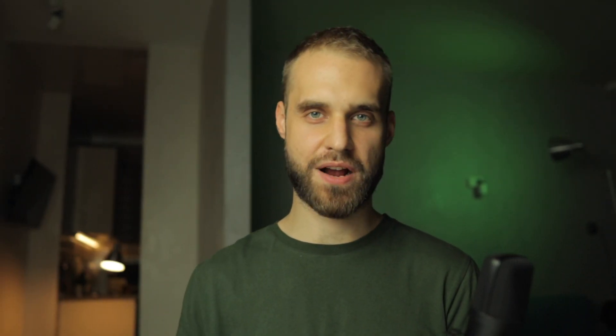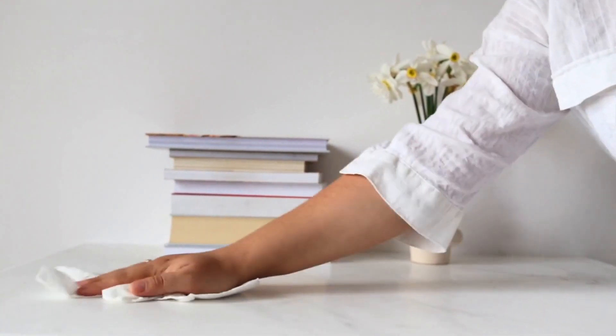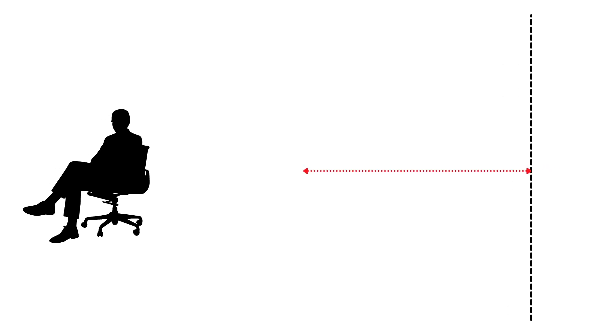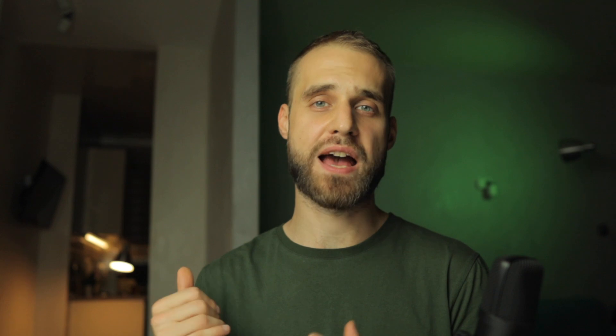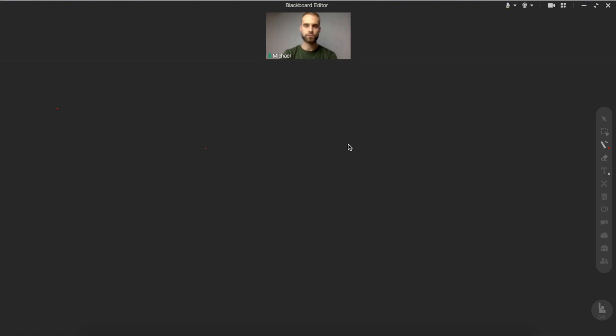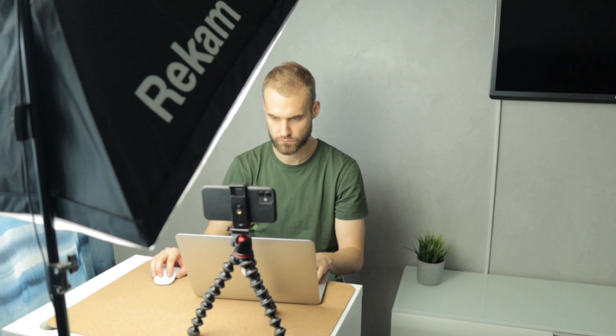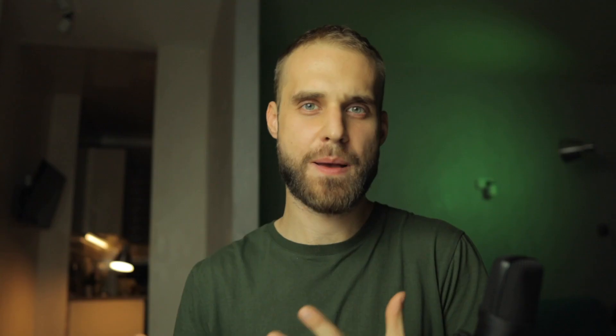Tip number two is to check your background. Just make sure that it's nice and clean and doesn't have any kind of stuff that can disturb you while you're having a class. If you want to add more depth to your video, you should consider making as much distance as possible between you and your background, and also try to separate yourself from the background using any kind of a background light. If you don't have this option, you can just use a wall behind you. Sometimes you don't really have time to prepare your background, or maybe you have a class in another place, so having a clean wall behind you is much better than having some sort of a messy background.